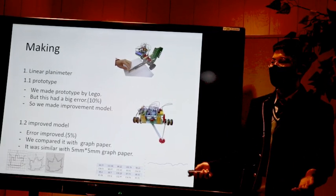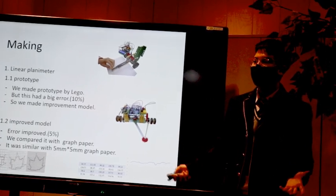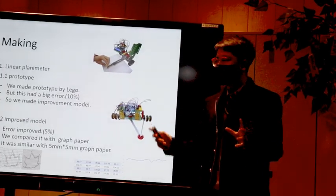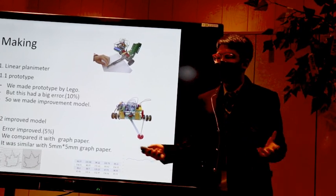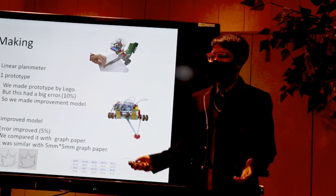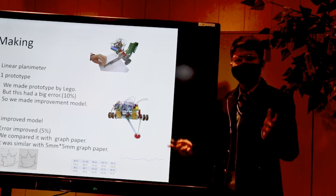We wanted to compare this error with graph paper. So we made an algorithm which calculates area with graph paper. We used Pick's law to calculate the area. We finally found out the error is similar to 5mm by 5mm graph paper.